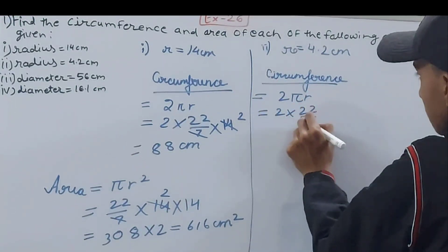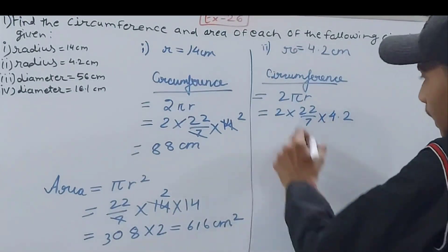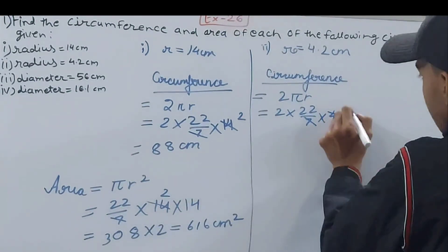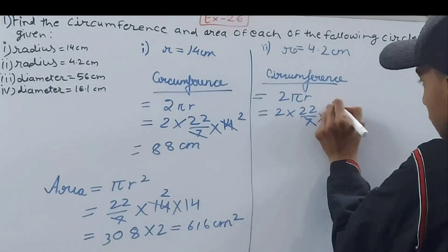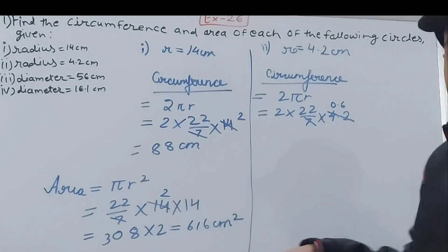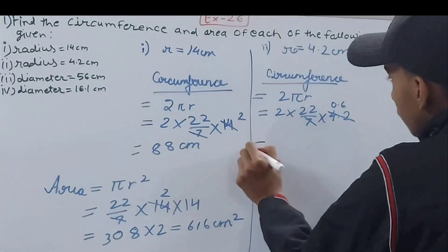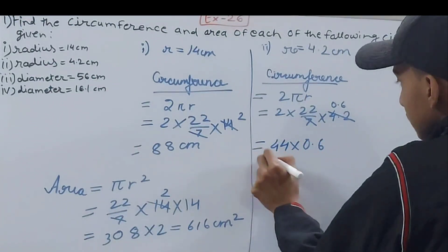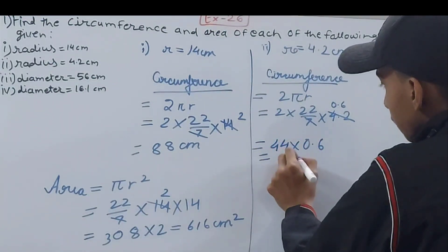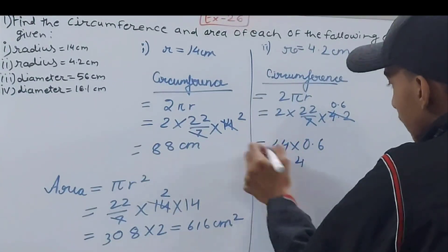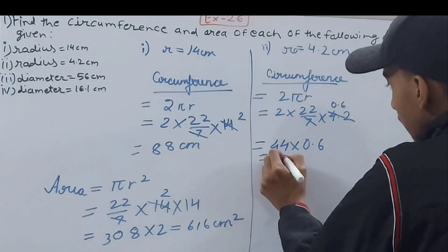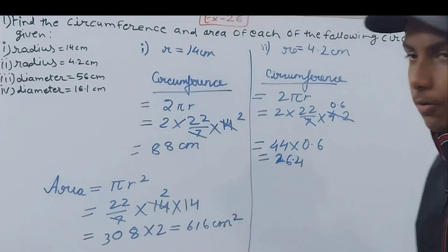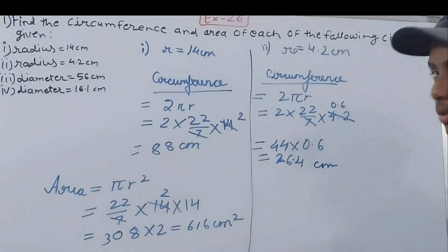That's 2 × 22/7 × 4.2. Seven and 4.2 we can cancel, 42 goes 6 times by 7, but here it is 4.2 so I will do 0.6. Now 2 × 22 = 44, 4 × 0.6, 6 fours are 24 and 2 carried over, 24 and 4 is 264. Put the decimal point after one place, 26.4 centimeters.